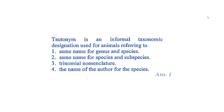Next: tautonymy is an informal taxonomic designation used for animals referring to which of the following? Same name for genus and species, same name for species and subspecies, trinomial nomenclature, or the name of the author for the species. The right answer is option 1 – same name for the genus and species.